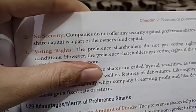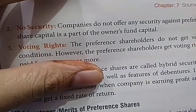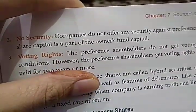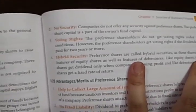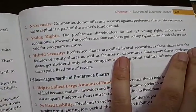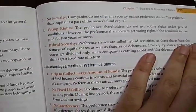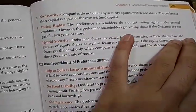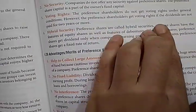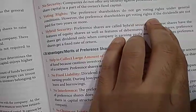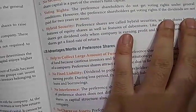Preference shares are part of the owner's capital fund, so no security needs to be given. Third is voting rights — preference shareholders generally do not get voting rights under normal conditions. However, preference shareholders get voting rights if dividends are not paid for two years or more.